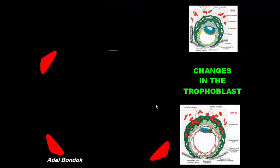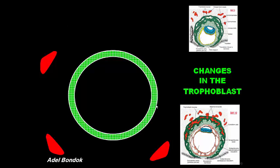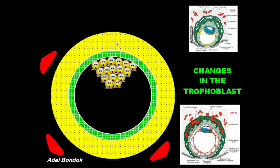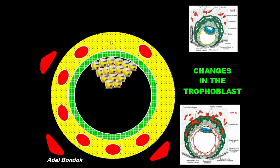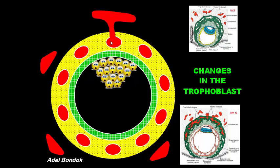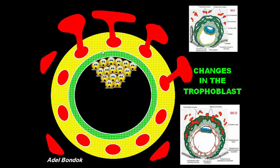Again, changes in the trophoblast: first, formation of two layers — syncytiotrophoblast and cytotrophoblast. Second, appearance of cavities or lacunae filled with maternal blood. Third, these cavities become continuous with the maternal capillaries, establishing uteroplacental circulation. Fourth, formation of primary chorionic villi — extensions from the cytotrophoblast into the syncytiotrophoblast — fixing the blastocyst into the endometrium.